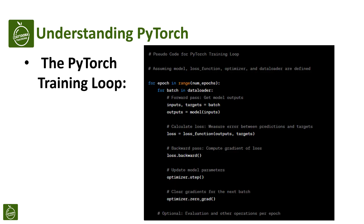Let's break down the PyTorch training loop step by step. Imagine this loop as the heart of our model's learning process. First, we run through multiple epochs, which means we pass our entire dataset through the model several times. This repetition is key to deepening the model's understanding.